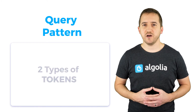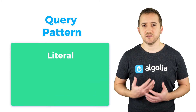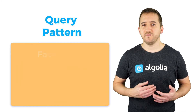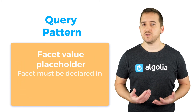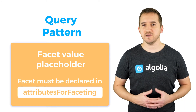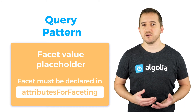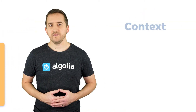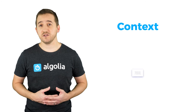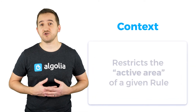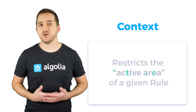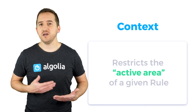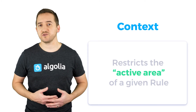The query pattern consists of one or multiple tokens treated as a phrase. There are two types of allowed token: literal, which is a plain word that must appear exactly as is, and facet value placeholder, which will match any value of a given facet in the same index. For this to work, the facet must have been declared first in the attribute for faceting. The second part of the condition is the context in which it should trigger. This is optional and allows you to enable the rule only for a subset of queries — for example, in a specific category of an e-commerce web store.